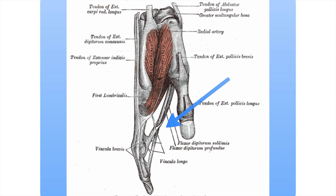This diagram demonstrates how the flexor digitorum profundus goes through the flexor digitorum superficialis tendons, as demonstrated by the arrow. This clearly demonstrates the function of these muscles.